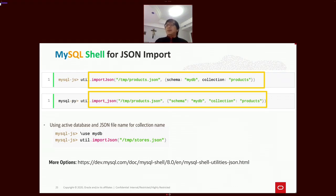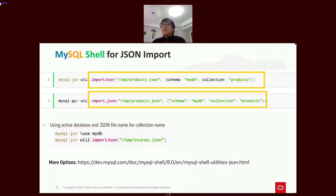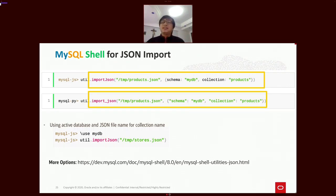You can import JSON documents to an existing table or collection, or to a new one created for the import. The slide shows examples to import product.json to the mysql_db schema with collection name 'product'. The syntax between JavaScript and Python is similar. If the target table or collection does not exist in the database, it will automatically be created by the utility using the JSON file name.